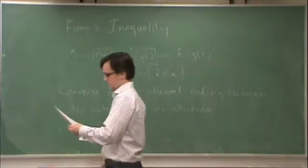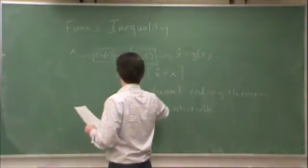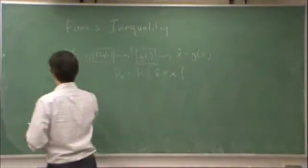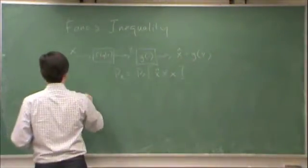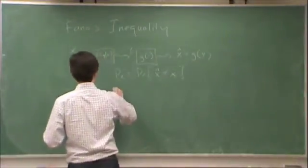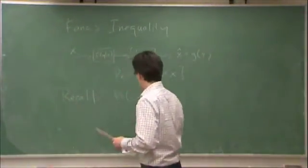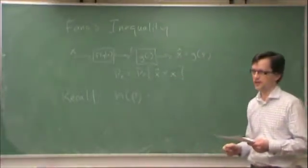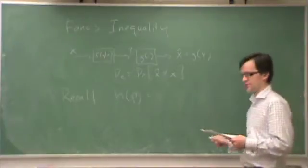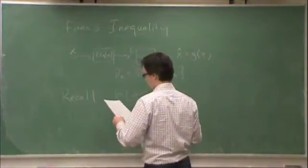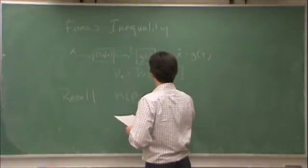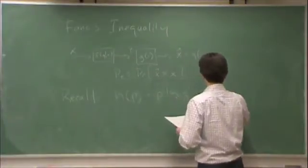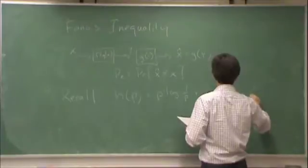So, with those definitions, one other definition, recall the function little h, little h of p, is the binary entropy function. In other words, it's the entropy of a binary source with probability of one equal to p. And that is p log one over p plus one minus p log one over one minus p.